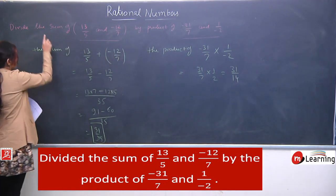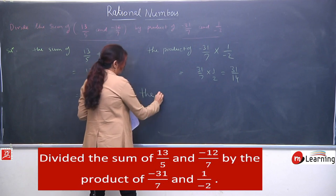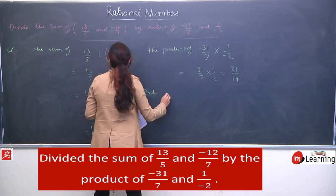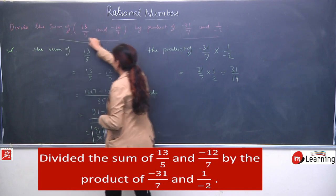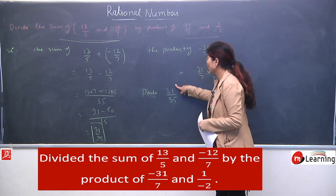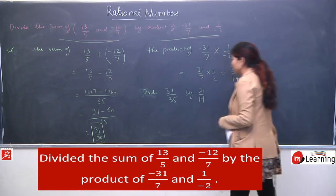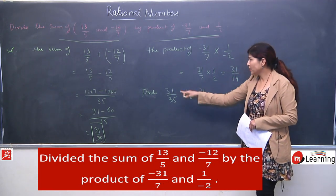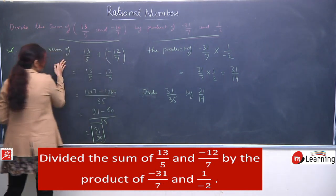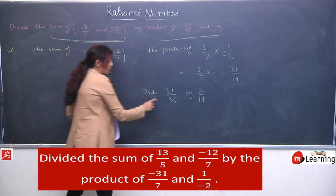Product of those two terms: idhar bhi minus hain, idhar bhi minus hain — sin will eliminate, it will convert into plus. So you have this, and finally it is 31 by 14. Now the question was: divide the sum of this by the product of this. Ek baar aapko question phir se bata deti hoon — divide. In place of the sum, I can write 31 by 35. And in place of the product, I can write 31 by 14. Hum ne un terms ki place pe humara answer rakh diya.